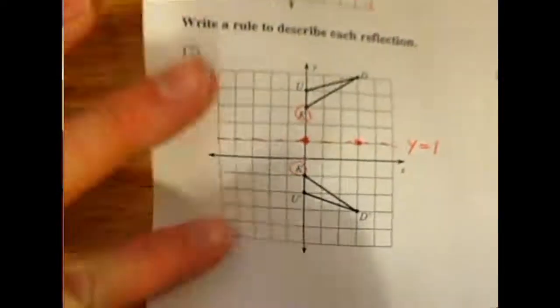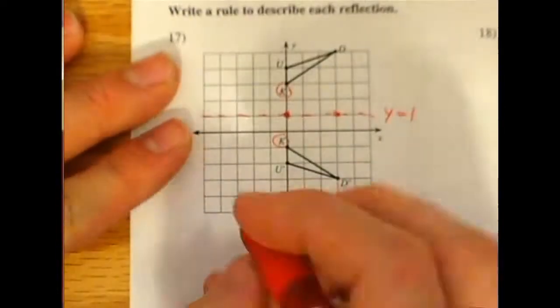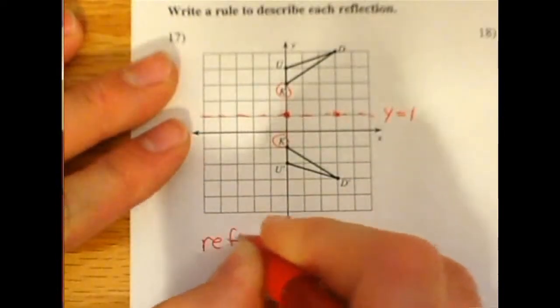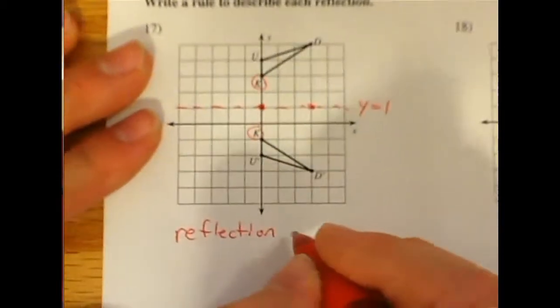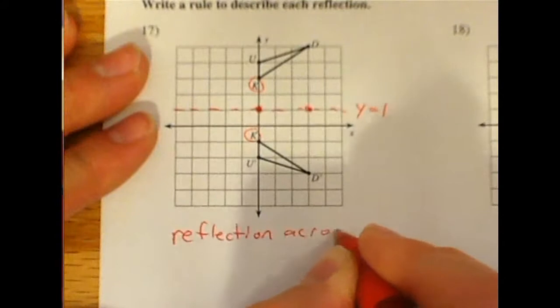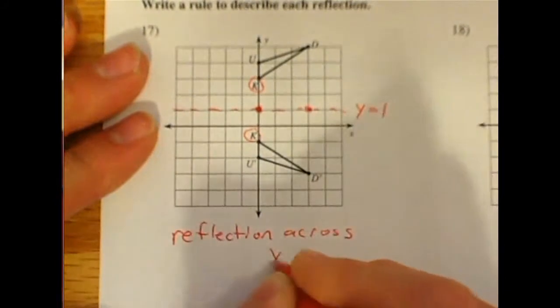So the way you'd write your rule is you would say a reflection, not a translation, not a rotation, but a reflection across y equals 1.